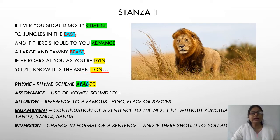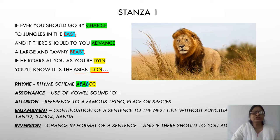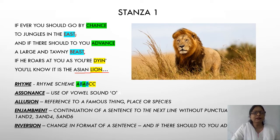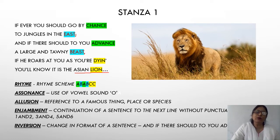Now let us understand what inversion is. Inversion is a change in the format of a sentence. The poet, to make the words rhyme, has changed the placement of the words. For example: 'if ever you should go by chance to the jungle in the east and if there should to you advance' — instead of writing 'if a large and tawny beast advances towards you,' she says 'if there should to you advance.' So she has changed the placement of the words. That is inversion.